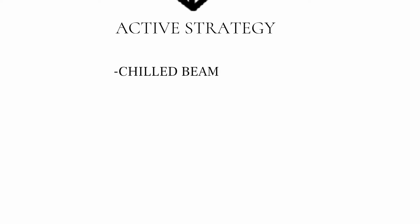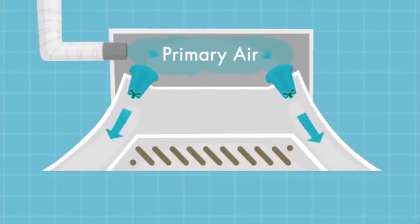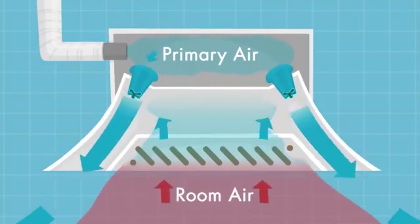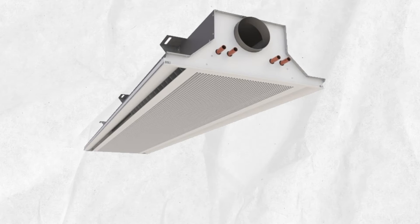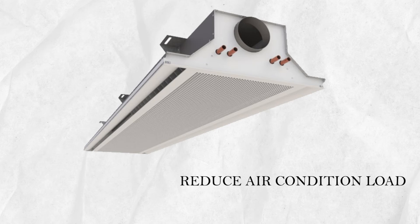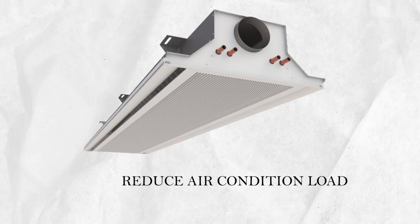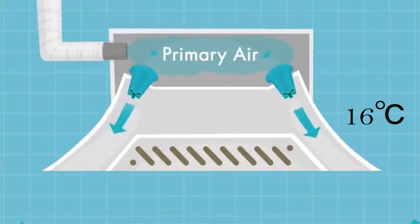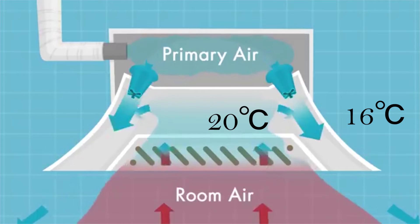Chilled beam: A chilled beam is a heat exchanger where it supplies cool air and sucks hot air, causing convection to happen which cools the room. Chilled beams were installed in all conditioned office spaces to reduce air conditioning load. Chilled water is supplied to the room at 16 degrees and returns at 20 degrees, which cools the room by 4 degrees without the need of air conditioning.